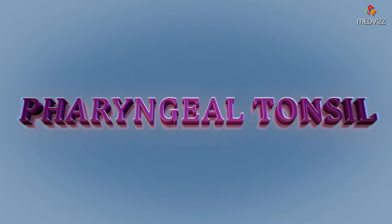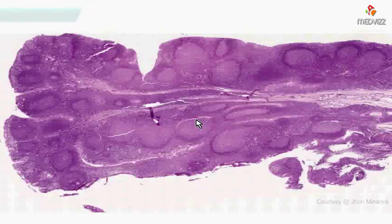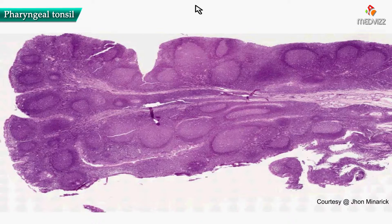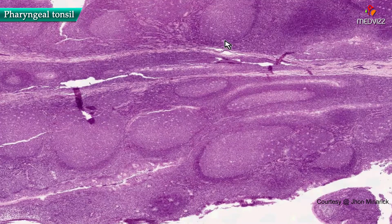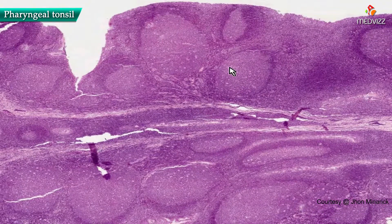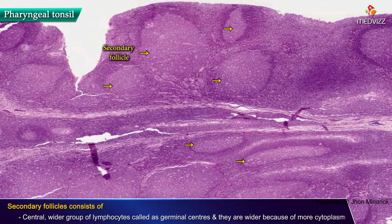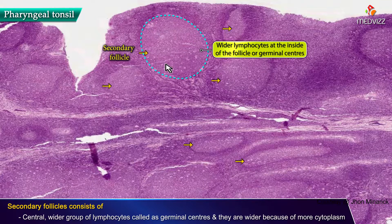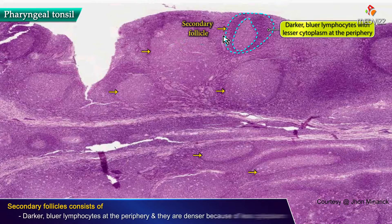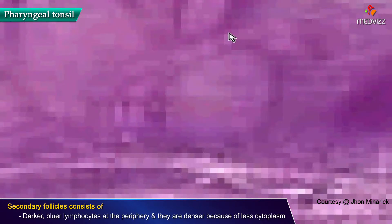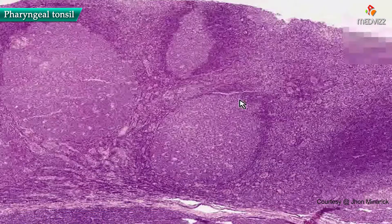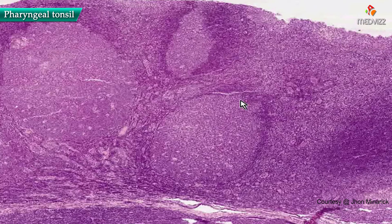This is a pharyngeal tonsil. Here is another obvious lymphoid tissue or perhaps lymphoid organ, in which you can see, like in practically all lymphoid organs, follicles or secondary follicles. In these, you have the clearer or lighter lymphocytes on the inside of the follicle or the germinal center, and then the darker, bluer, or less cytoplasm cells towards the periphery of the follicle. So we know that this is some type of lymphoid tissue.